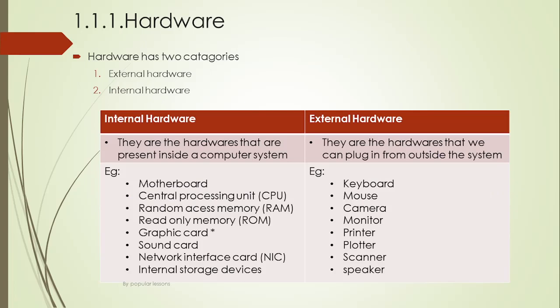Hardware is divided into two categories: internal hardware and external hardware. Internal hardware refers to the hardware present inside a computer system. For example: motherboard, central processing unit or CPU, Random Access Memory (RAM), Read-Only Memory (ROM), graphic card, sound card, network interface card, and internal storage devices. These days you can find external graphic cards as well.